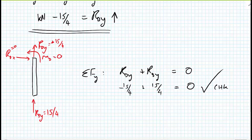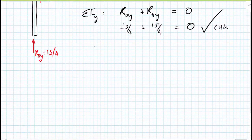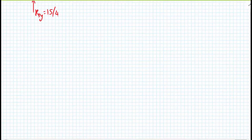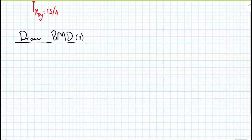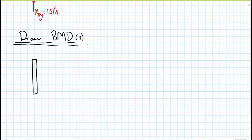We now know every force and moment, both external and internal, at all joints on the structure. With that information, we can draw our bending moment diagrams. We'll redraw the free-body diagrams with magnitudes only and corrected arrow directions.